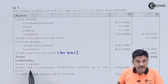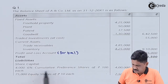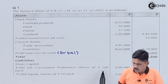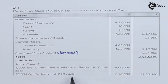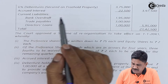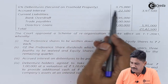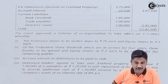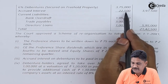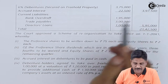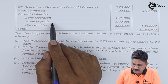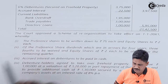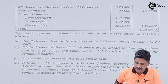Liabilities include Share Capital: 4,000 6% Cumulative Preference Shares of Rs.100 each, and 75,000 equity shares of Rs.100 each. 6% debentures secured on Freehold Property amounting to Rs.3,75,000, with accrued interest of Rs.20,500. Current liabilities include Bank Overdraft, Trade Payable, and Director Loan.